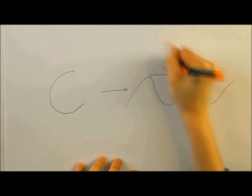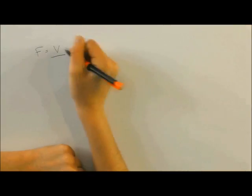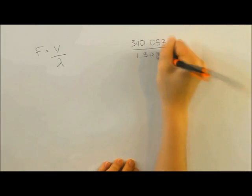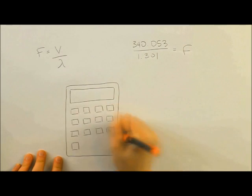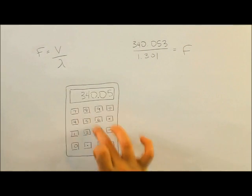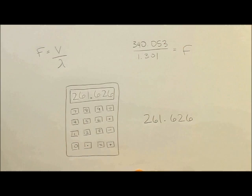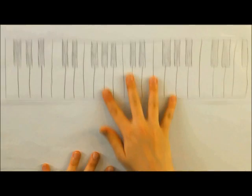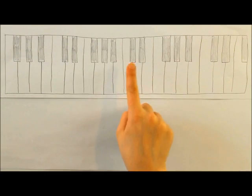She just said that the note C, middle C, or the C in the fourth octave has a wavelength of 1.301. So if we do a math calculation, frequency equals velocity over the wavelength, the velocity being the speed of sound divided by the wavelength, which is represented by the lambda sign, which is the unit for wavelength. We get 261.626 as our frequency, which is the frequency for middle C.